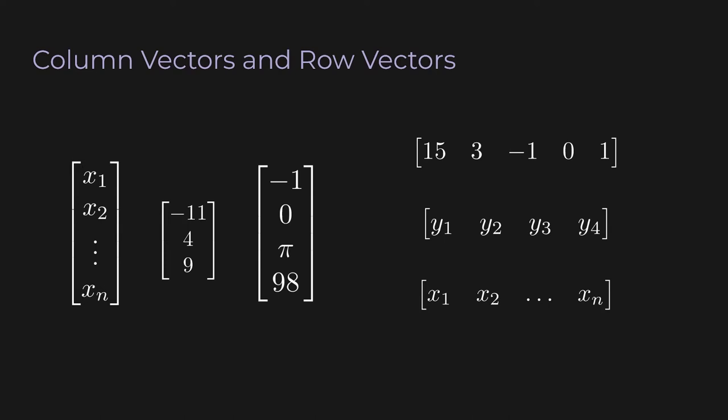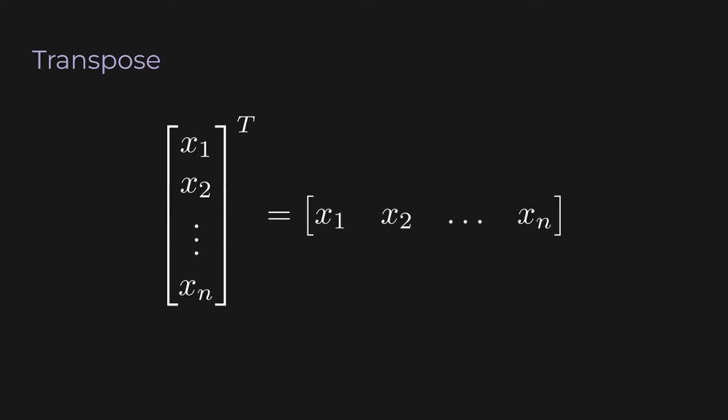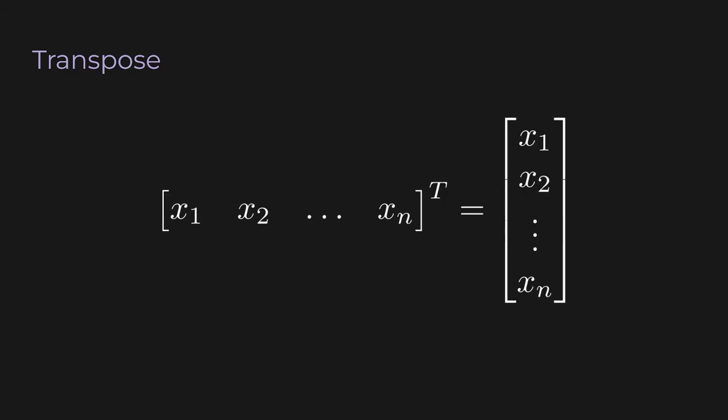This distinction will become crucial later when we talk about matrices. There's a mathematical operation used to switch between these two types of vectors — that is the transpose. We write it with a capital T as a superscript. We apply it to a vector x to get the row vector version. Applying the transpose to a row vector gives a column vector. And if you apply the transpose twice to a vector, you get the same vector back.